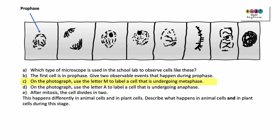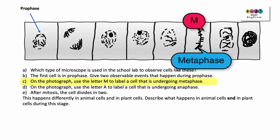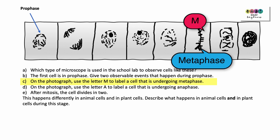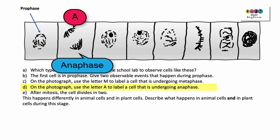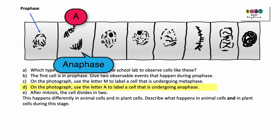On the photograph, use the letter M to label a cell that's undergoing metaphase. Remember, metaphase is where the chromosomes line up across the middle or the equator of the cell. On the photograph, use the letter A to label a cell that is undergoing anaphase. Remember, anaphase — A equals away — so the chromosomes are being pulled apart, separated.